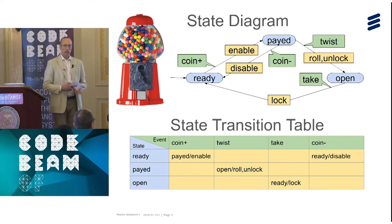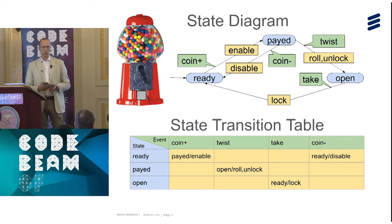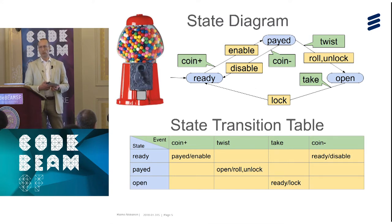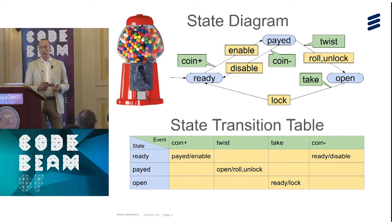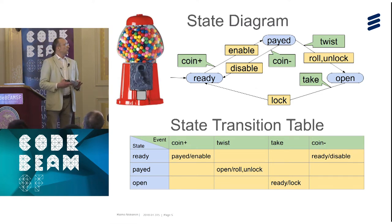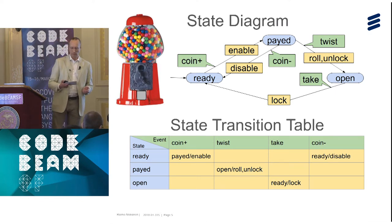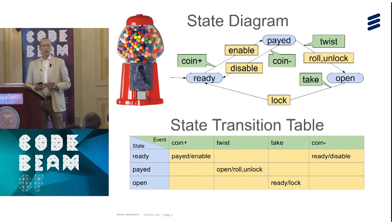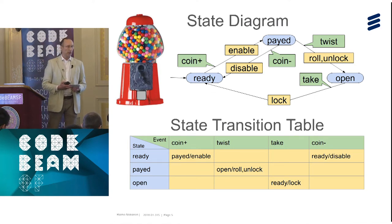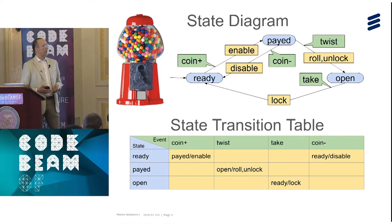Just to be sure everybody's on the same page: a state machine is a model for how a machine acts on input. We often talk about event-driven state machines. The machine has a set of states; it can be in one state at a time. When an event occurs, it changes state — it makes a state transition. During the transition, it makes some kind of action, which is often the useful thing it does, like an ATM machine giving you money.